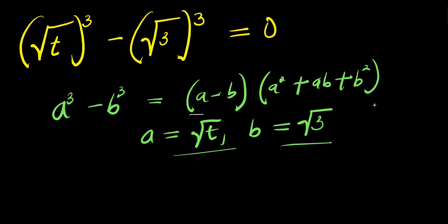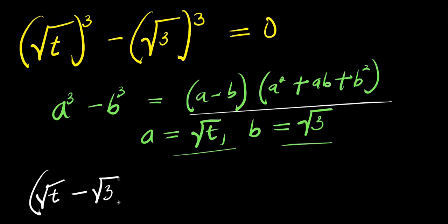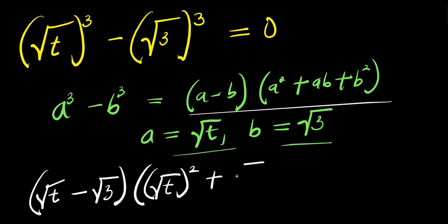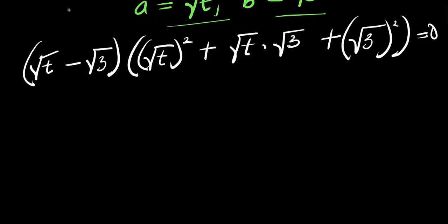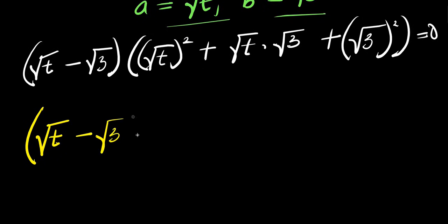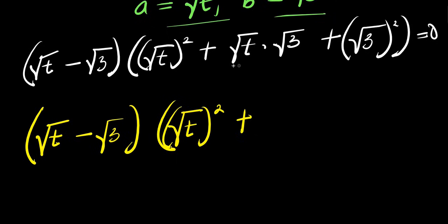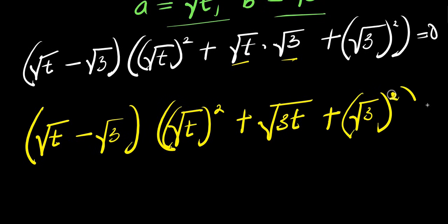We expand this expression. We have a minus b which is square root of t minus square root of three, times the quantity square root of t squared plus square root of t times square root of three plus square root of three squared, equals zero.